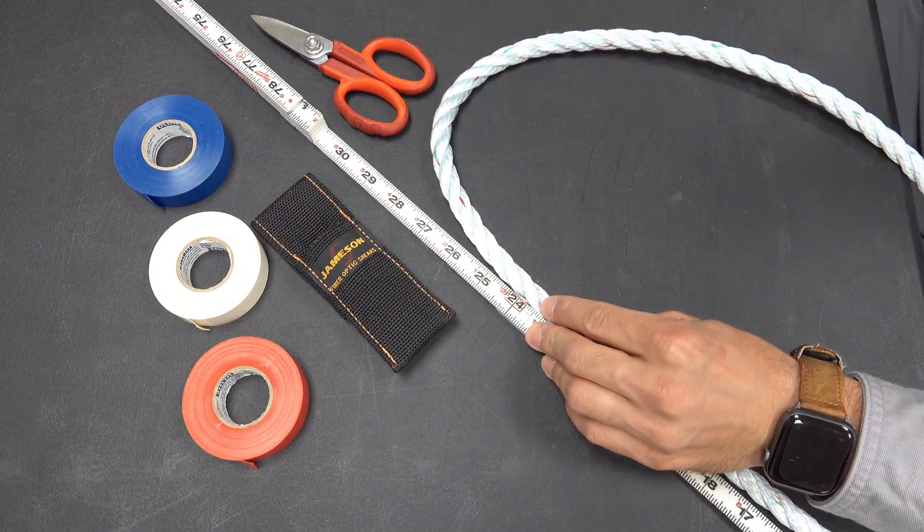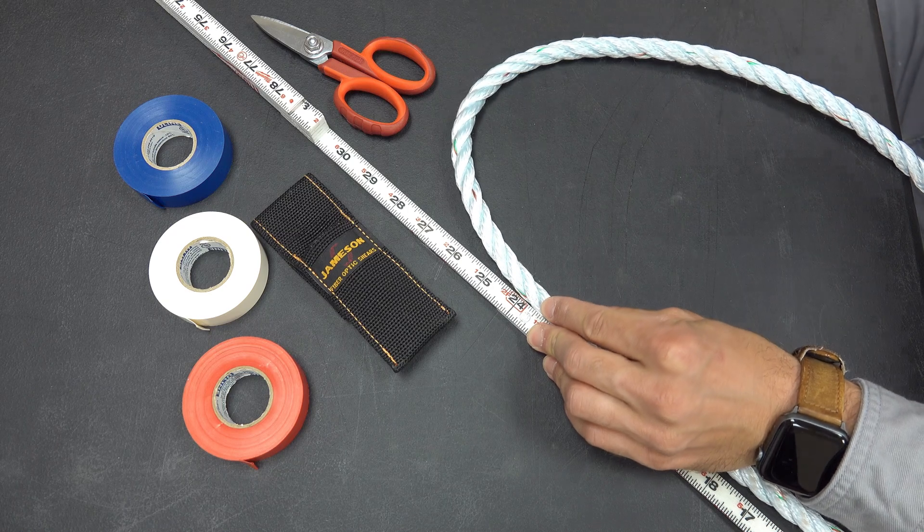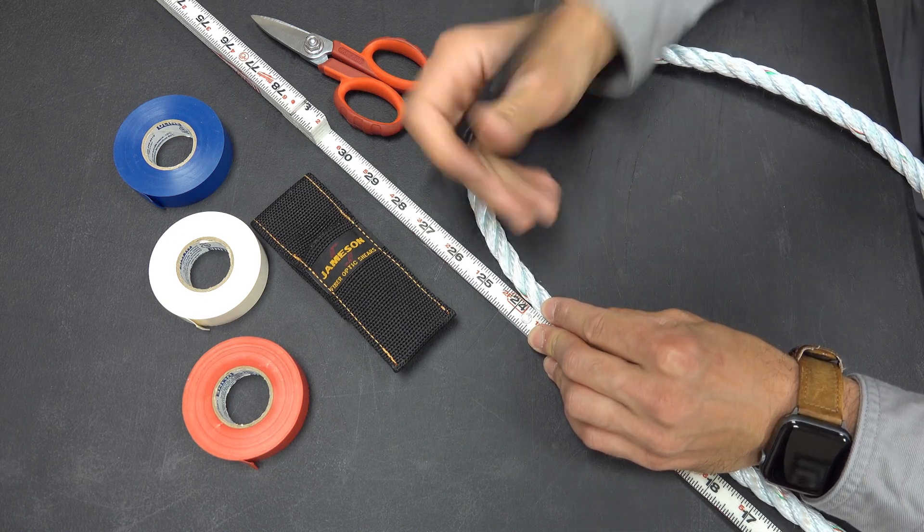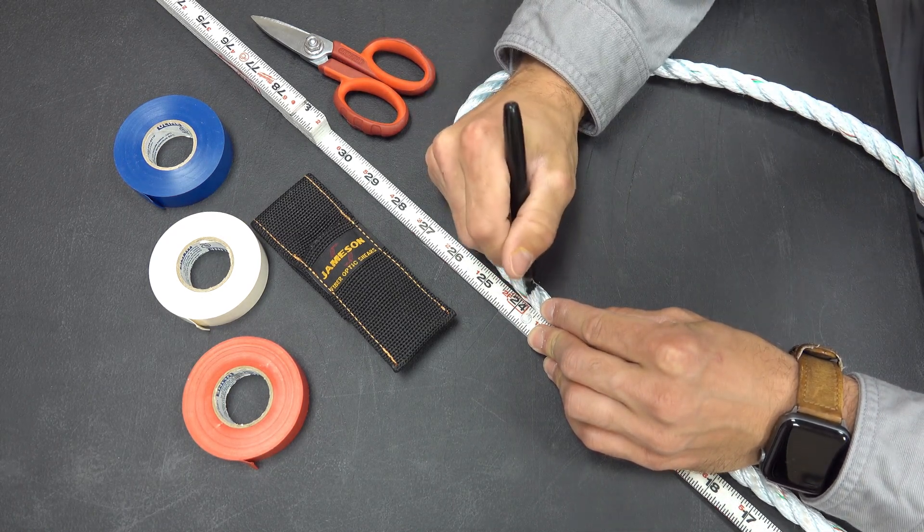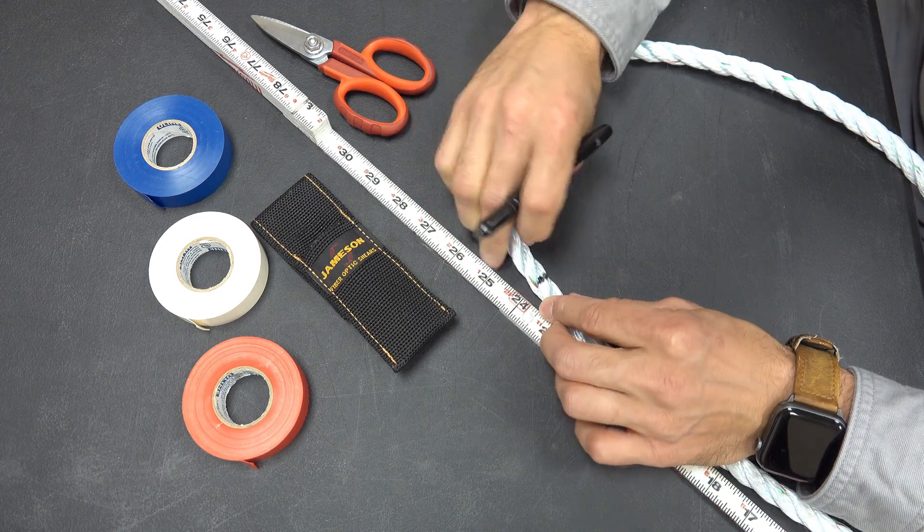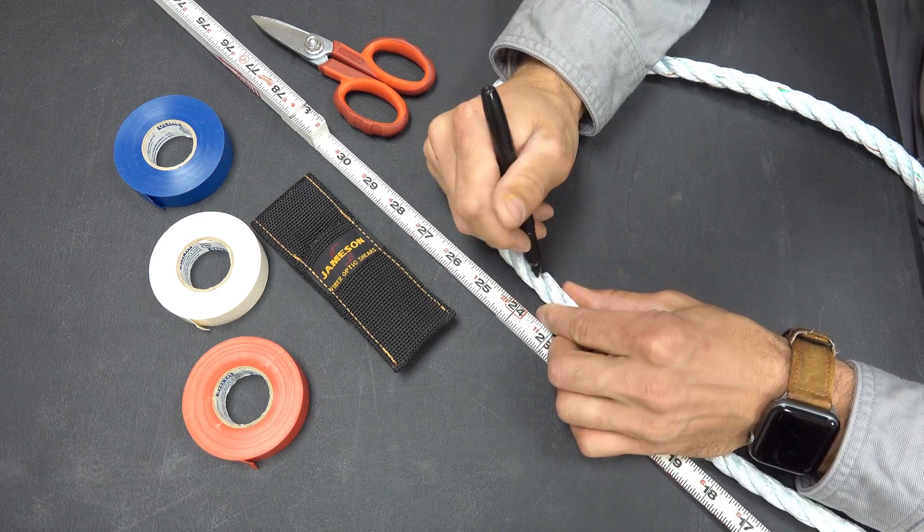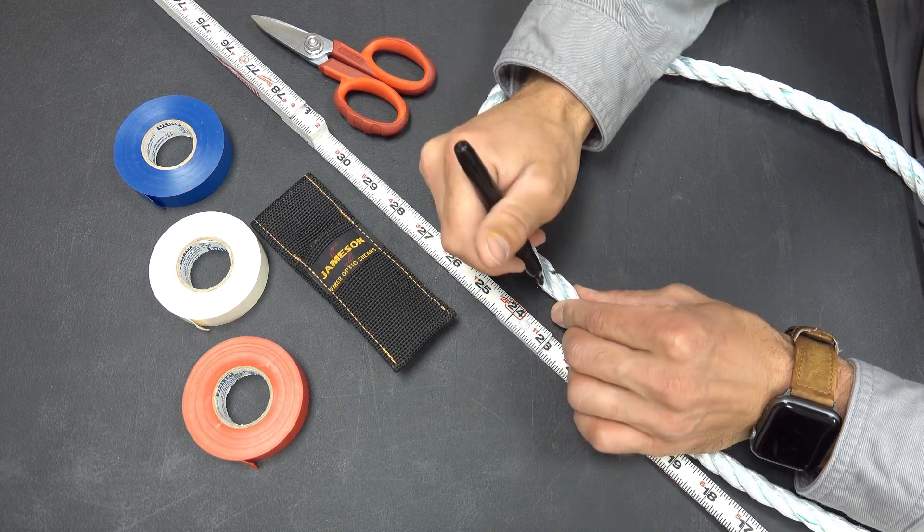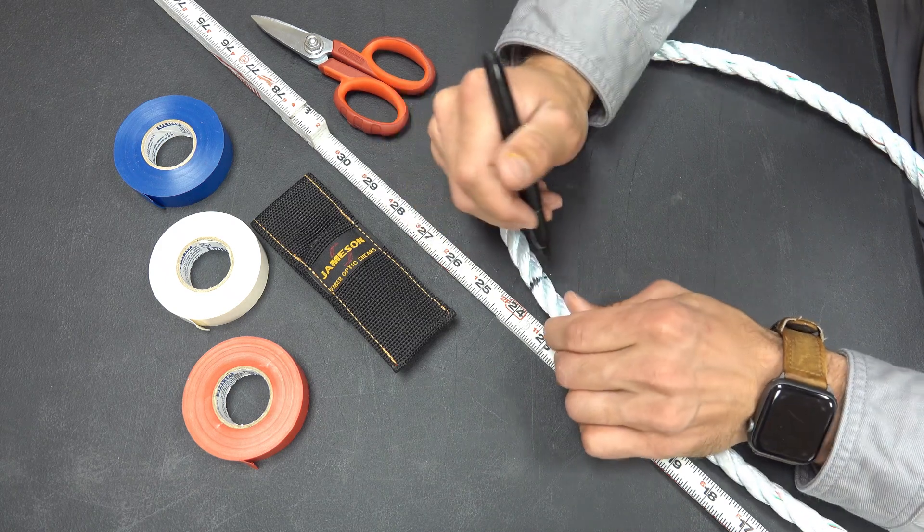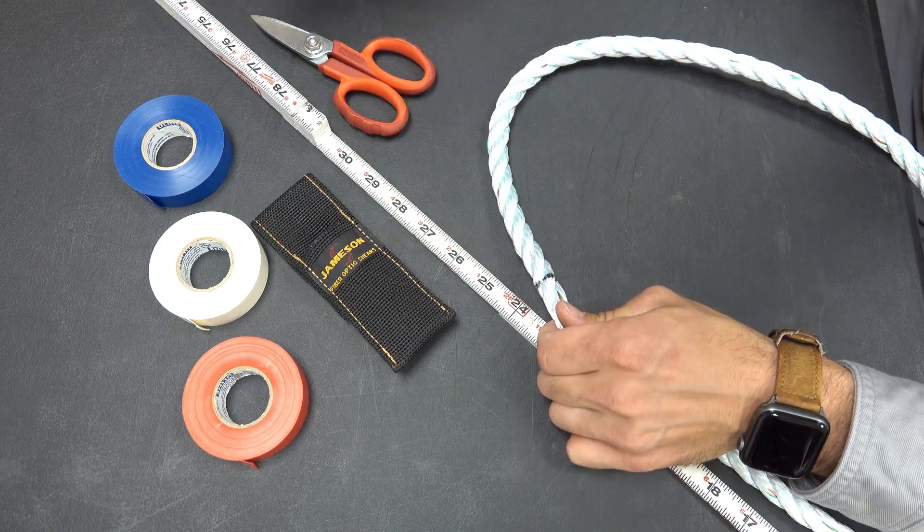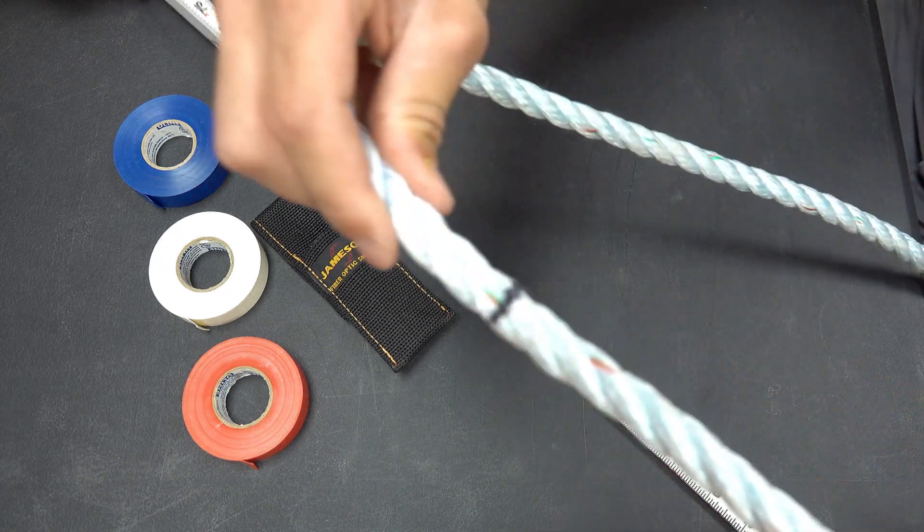What I'm going to do with my Sharpie is make a mark all the way around on my rope. It's going to look something like this.